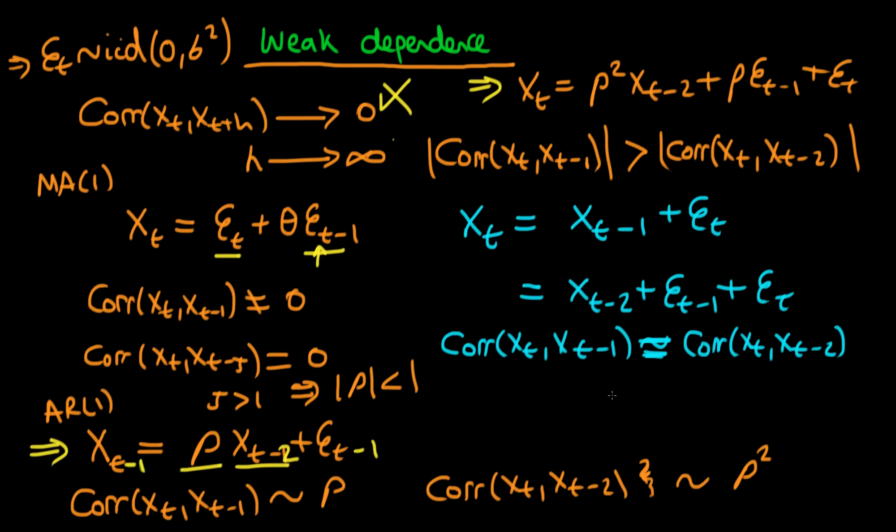The correlation between X_t and lagged values of X_t doesn't decrease as the lag increases. This particular series where ρ equals 1 isn't weakly dependent. It's actually a random walk, the classical example of a series that isn't weakly dependent.